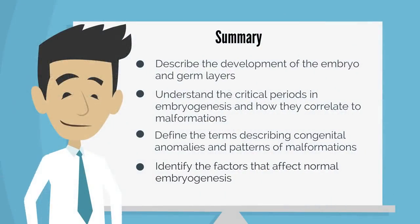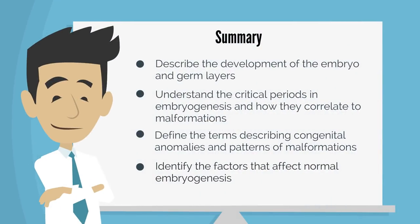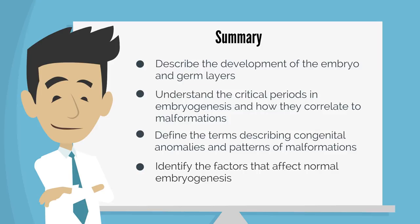This concludes this APCO basic science video about the embryology of common malformations. You should be able to describe the development of the embryo and germ layers — ectoderm, mesoderm, and endoderm — understand the critical periods in embryogenesis and how these correlate with the development of particular malformations, define the terms describing congenital anomalies and patterns of malformations, and identify the factors that affect embryogenesis and the mechanisms that alter normal embryogenesis. Thanks for watching.